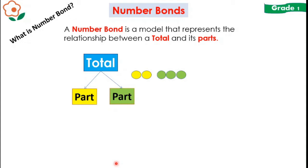In this example, you can see some dots. Some are green and some are yellow. So let's count them. 1, 2, 3, 4, and 5. There are five total dots.